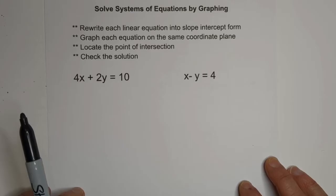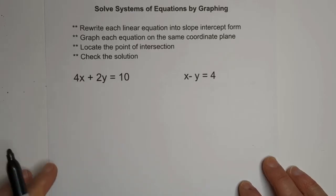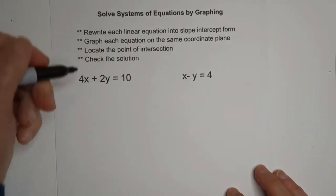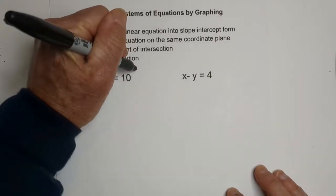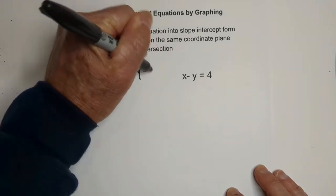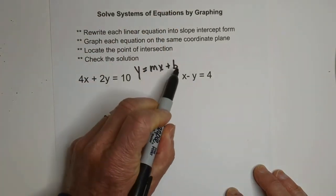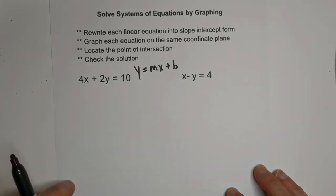So let's get started with this. Let's convert these into slope intercept form. Just a quick refresher: slope intercept form is y equals mx plus b with m being the slope and b being the y-intercept.